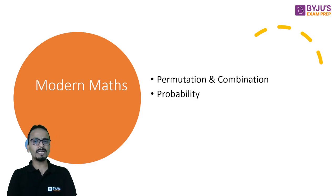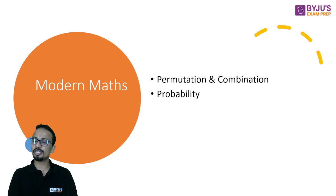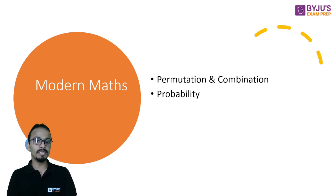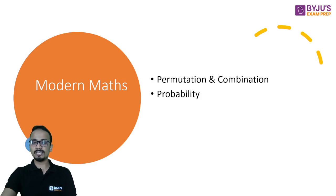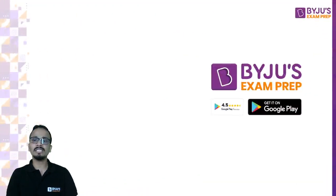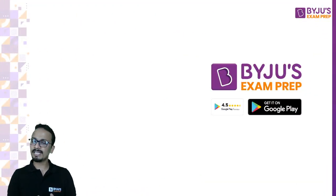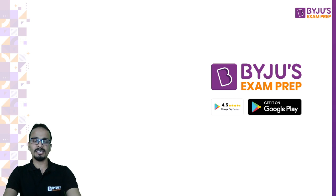Finally, Modern Maths — permutation, combination, and probability — will also appear, with very interesting questions from this area. That's it about the pattern and the type of questions you will see in CAT. Thank you very much.